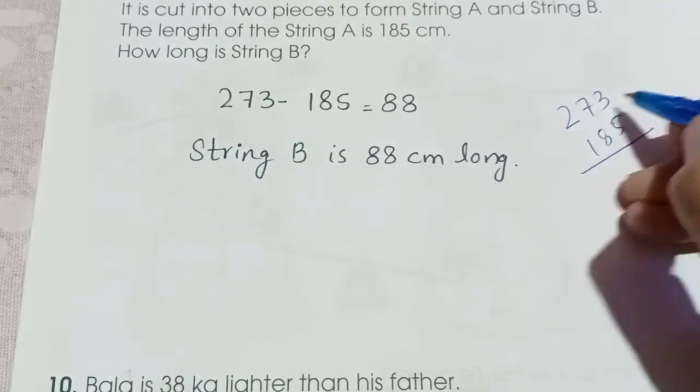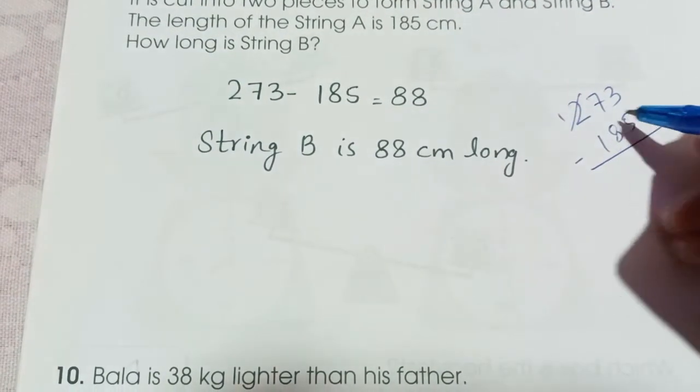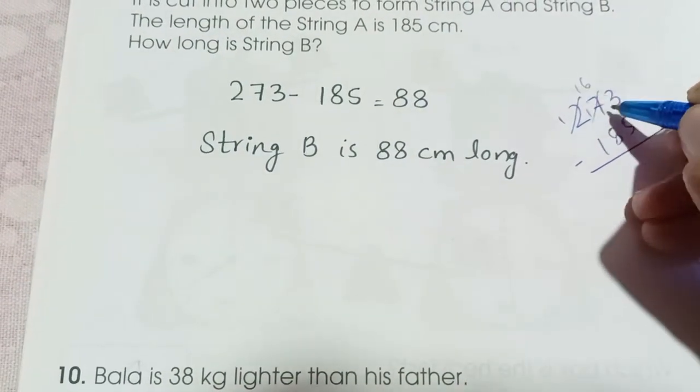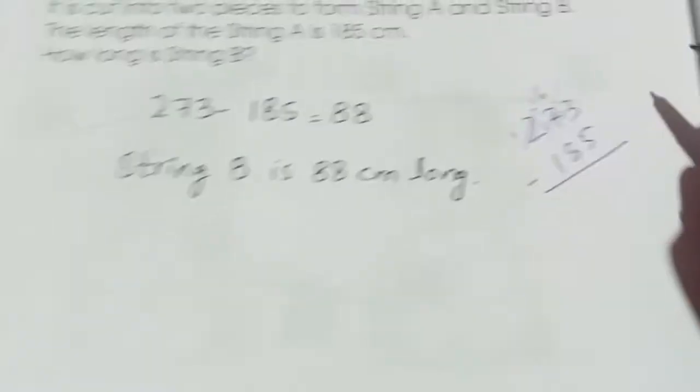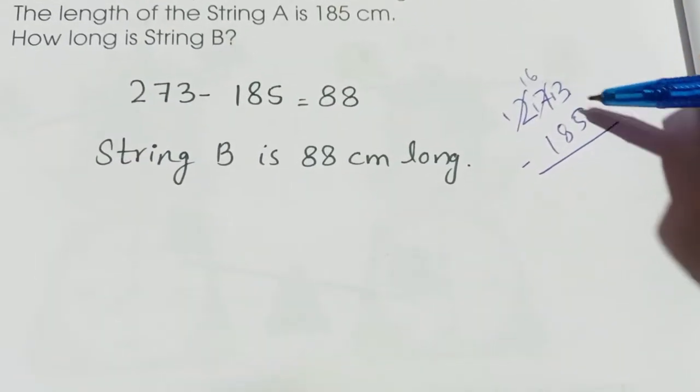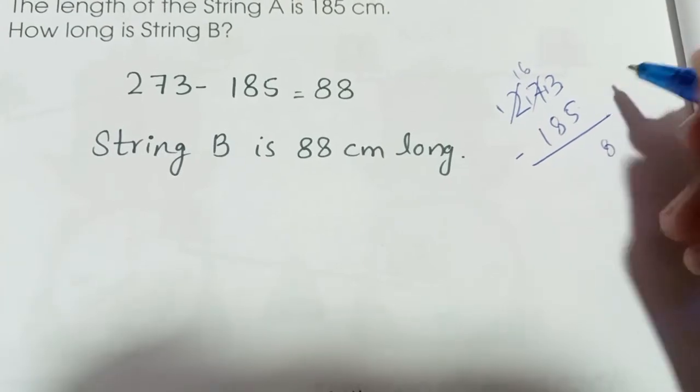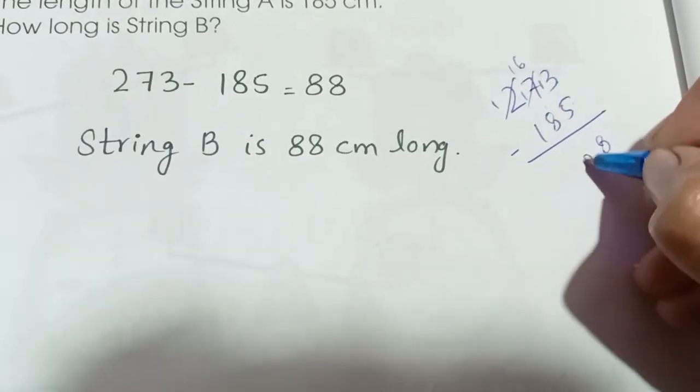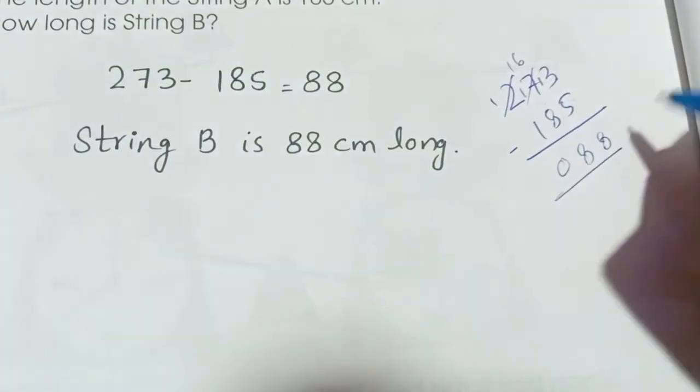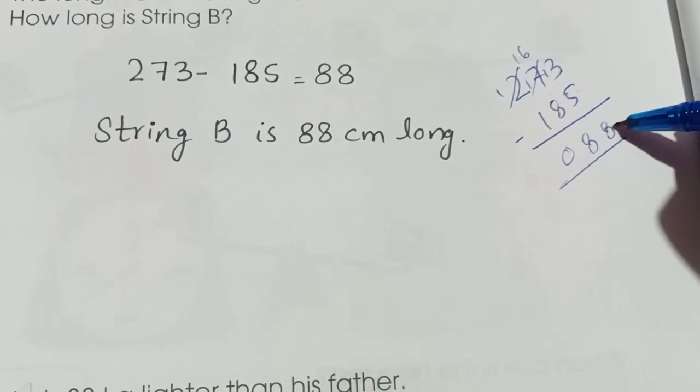273, 185. So we have to take the borrow. If the upper number is smaller than the lower number, we have to take the borrow. 13 minus 5 is 8. 16 minus 8 is 8. 1 minus 1 is 0. So we have the answer 88.